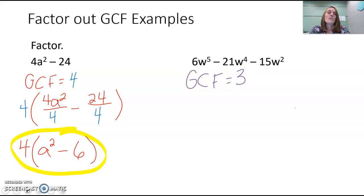And then we have 5w's. So when I try and figure out the variable that they have in common, I just look at how many w's do they each have? This one has 5w's, this one has 4, and this has 2. So they all have 2w's. So our greatest common factor would be 3w squared.